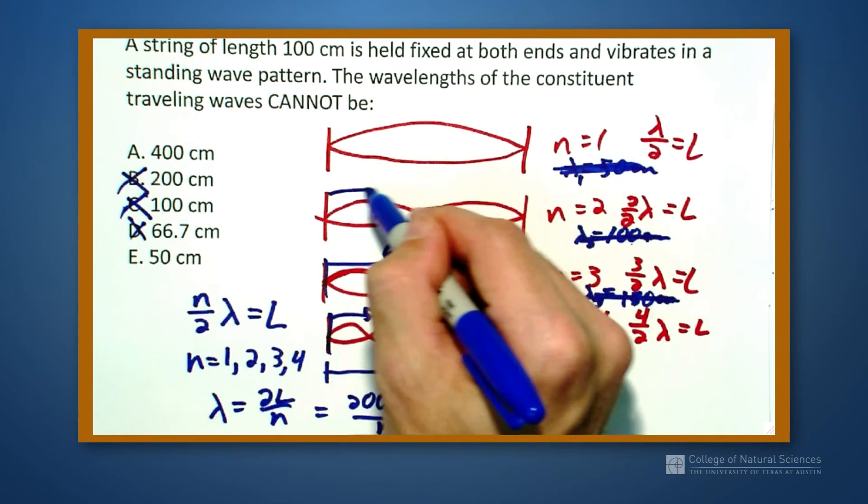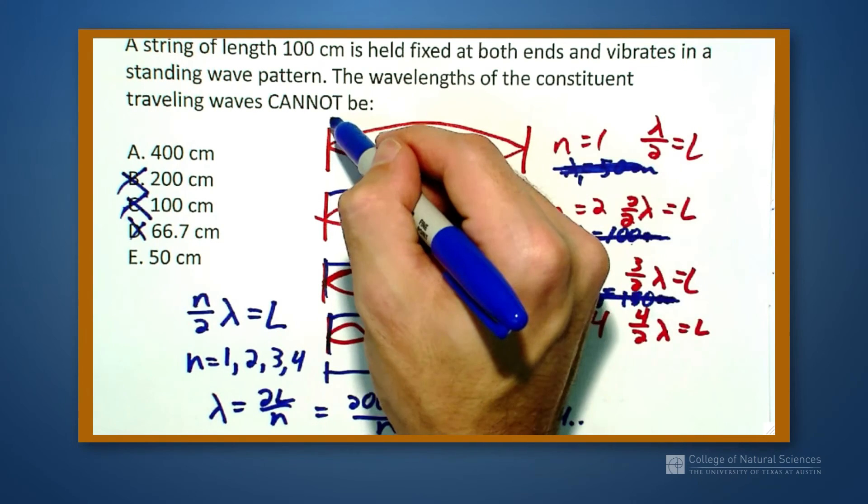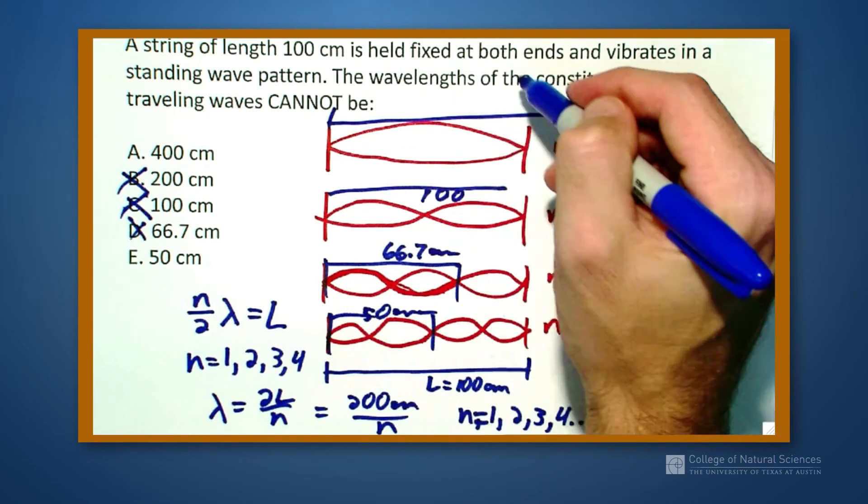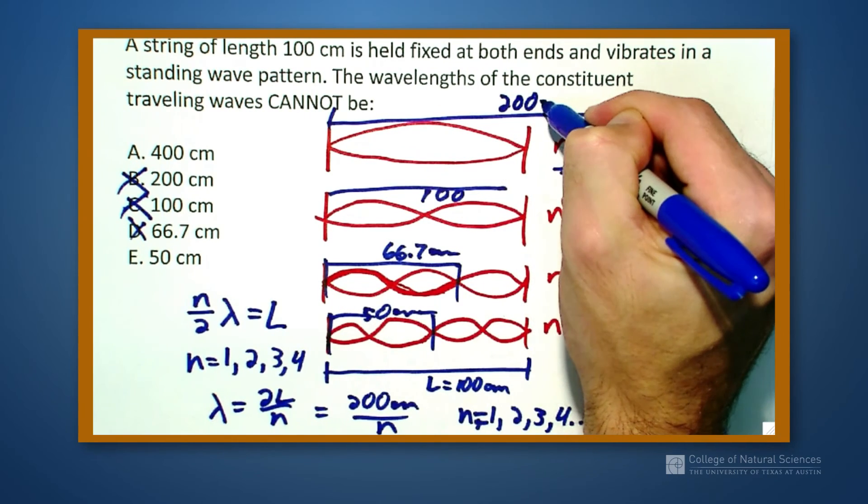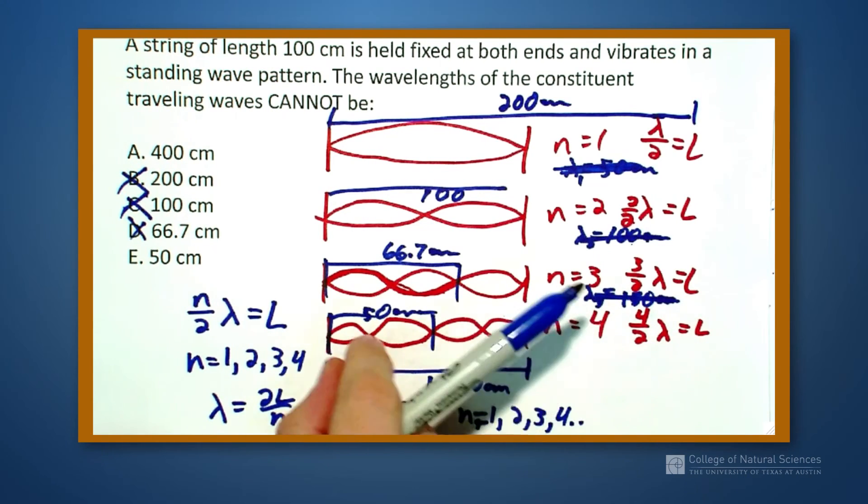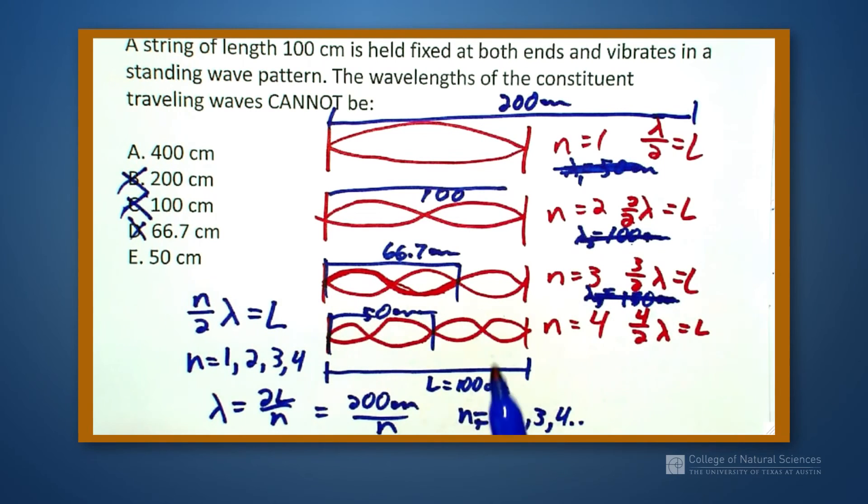So I'll see that each of these, so this is 200 centimeters, each of these numbers get smaller and smaller. The larger n gets, the more wavelengths we're able to fit in in one length or the shorter the wavelength that we get.